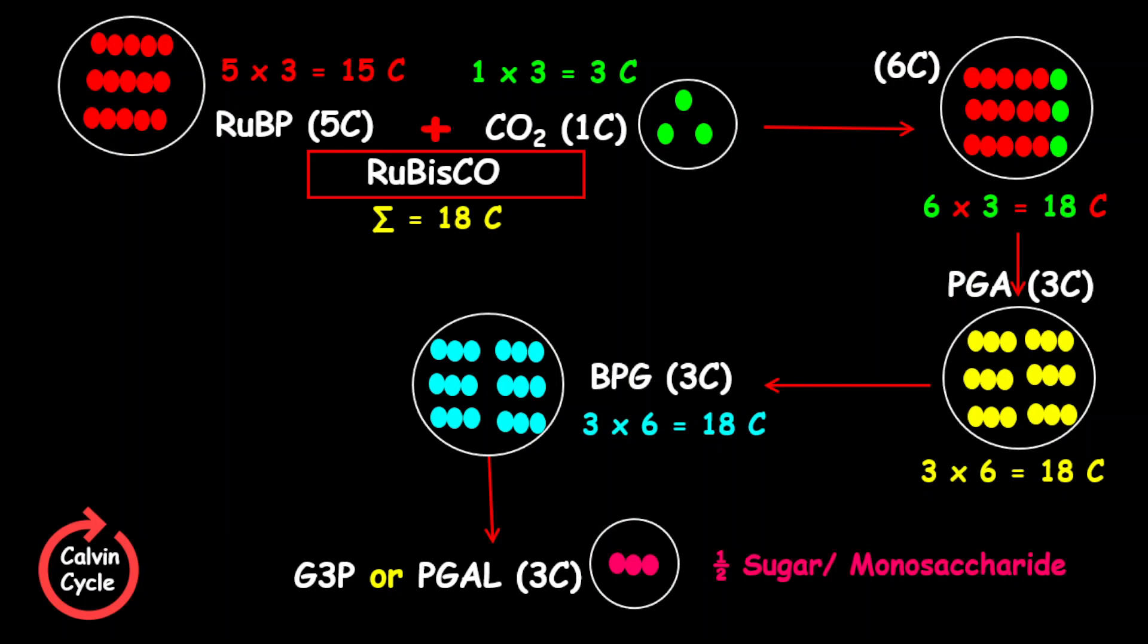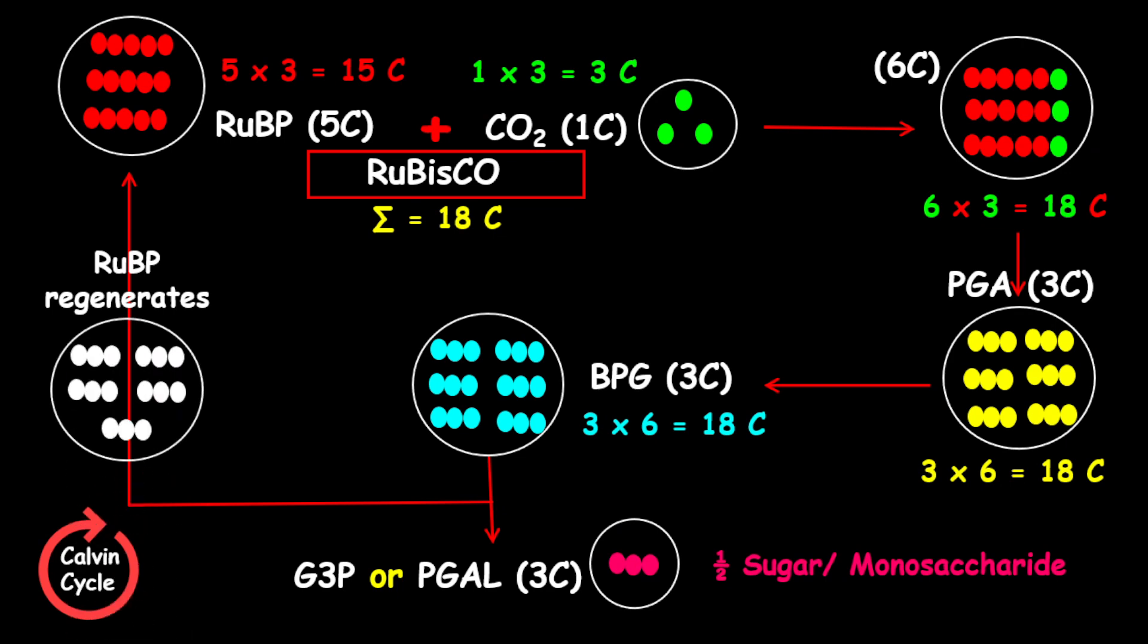Now, the big question is what happened to the remaining 15 carbon atoms. The remaining carbon atoms will be used to regenerate RuBP. Remember, RuBP is a 5-carbon molecule, but there will be 3 of these 5-carbon molecules. The remaining carbon atoms, which is 5 of the 3-carbon BPG, will rearrange into 3 molecules of RuBP. And that accounts for the 15 carbon atoms.